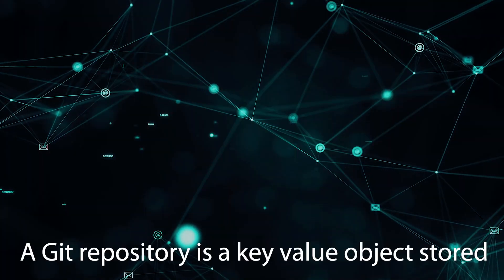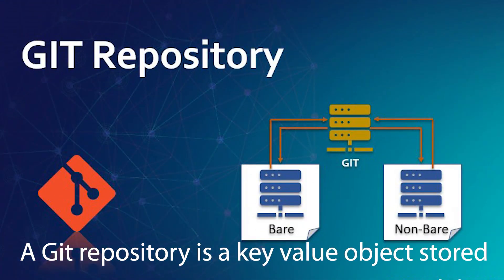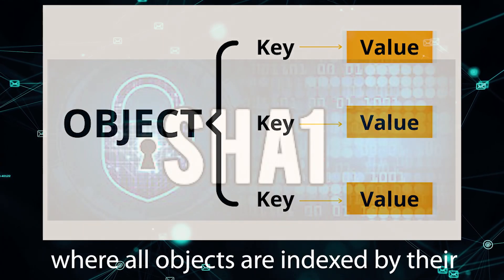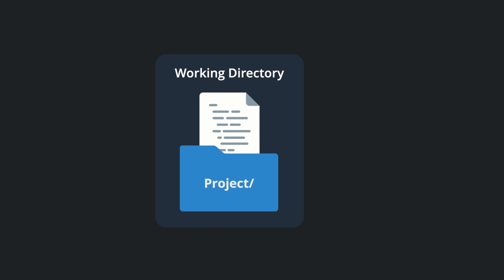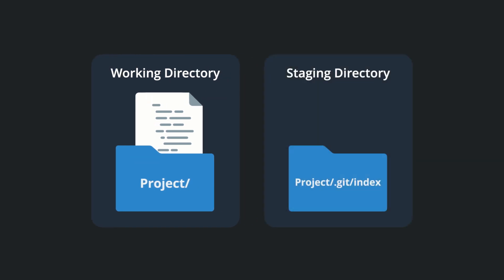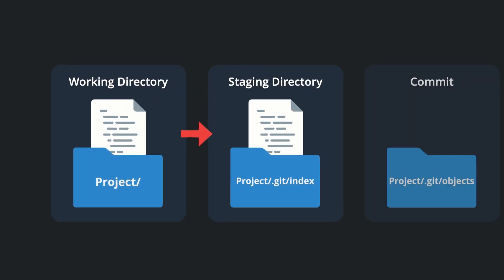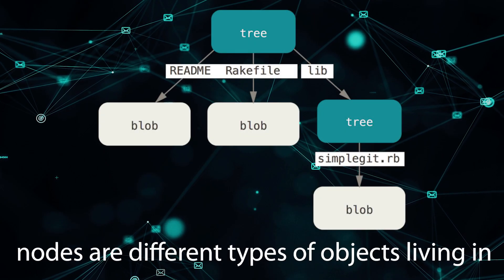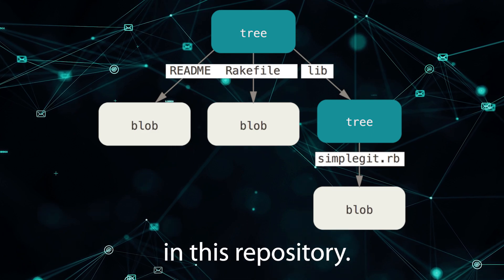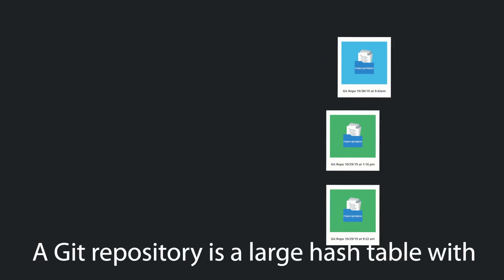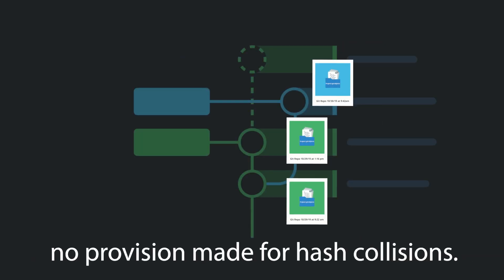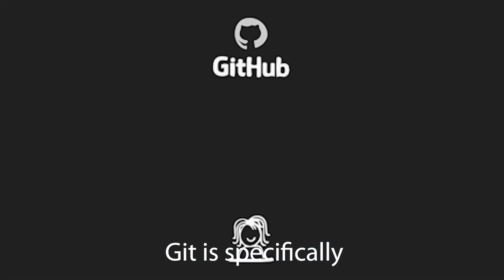So how does git work? A git repository is a key-value object store where all objects are indexed by their SHA1 hash value. All commits, files, tags, and file system tree nodes are different types of objects living in this repository. A git repository is a large hash table with no provision made for hash collisions.